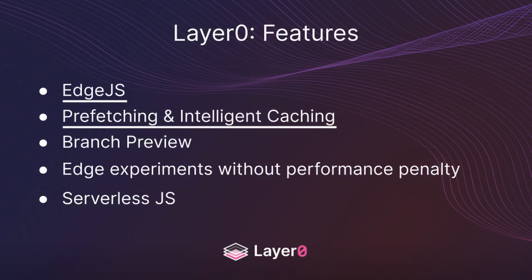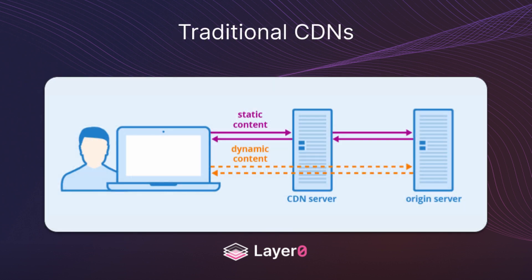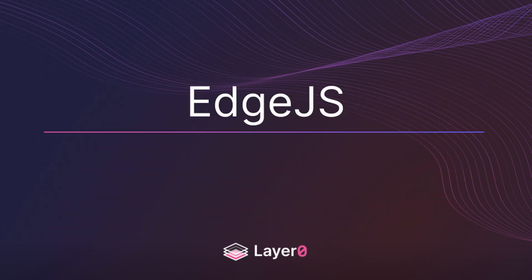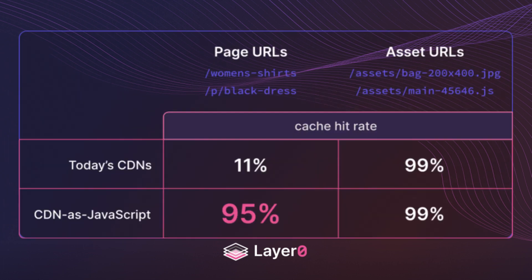Two of the best features of Layer 0 are Edge.js and prefetching. Traditionally, you'd use CDNs to cache your digital assets, like images and videos, to reduce site load times. By using Edge.js, you can now cache your API responses in addition to digital assets, which reduces load on your backend systems and allows for sub-second page load times.